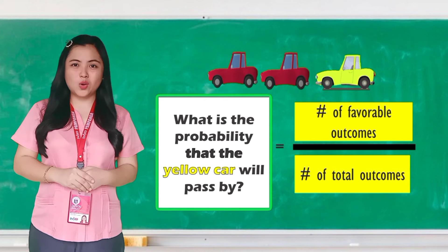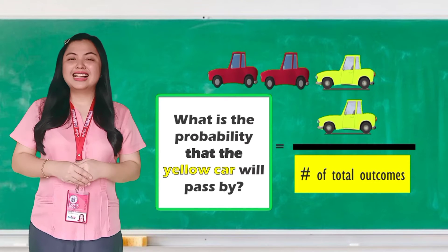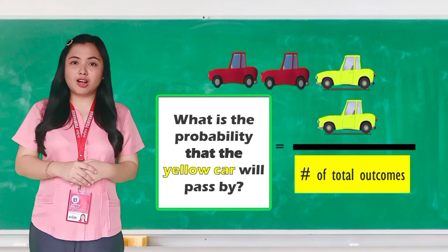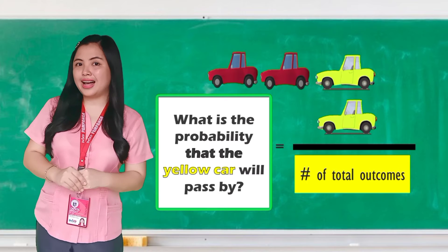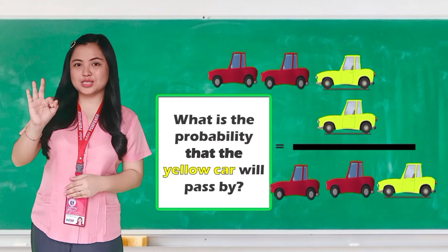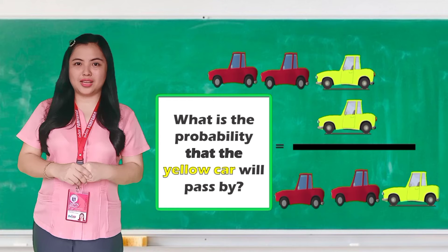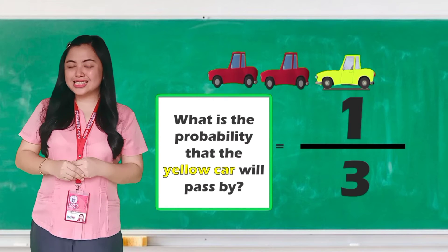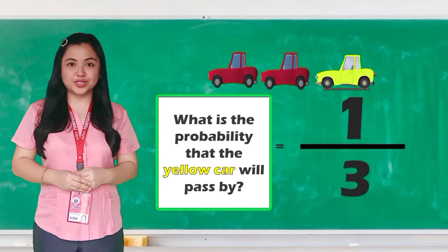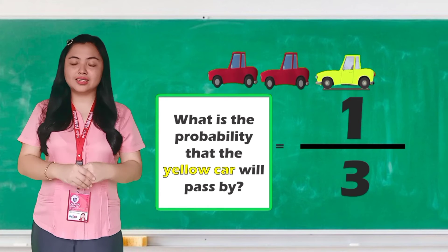There is only one yellow car. One will now be put on the numerator. Let's now proceed to the number of total outcomes. How many cars are there possible to pass by? There are three cars in all. Three will now be written on the denominator. Since we cannot simplify our answer any further, this is now our final answer. The probability that a yellow car will pass by is one third.